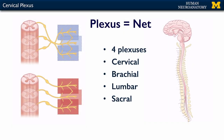There are four plexuses that I want you to know about. We have a cervical plexus, which involves nerves from the upper cervical region, C1 through about C4. We have a brachial plexus, which overlaps with the cervicals and some of the upper thoracics. We have a lumbar plexus and a sacral plexus. These different plexuses have different targets in the periphery.